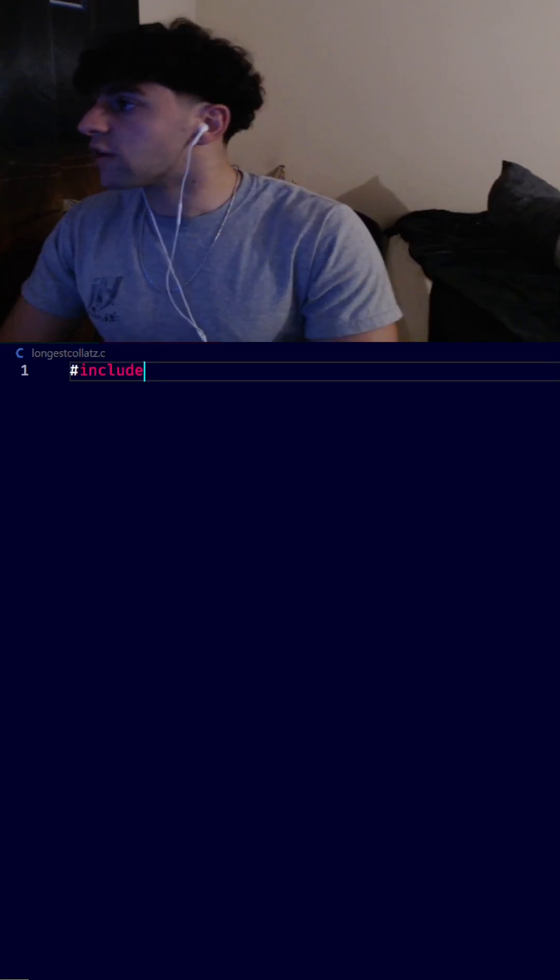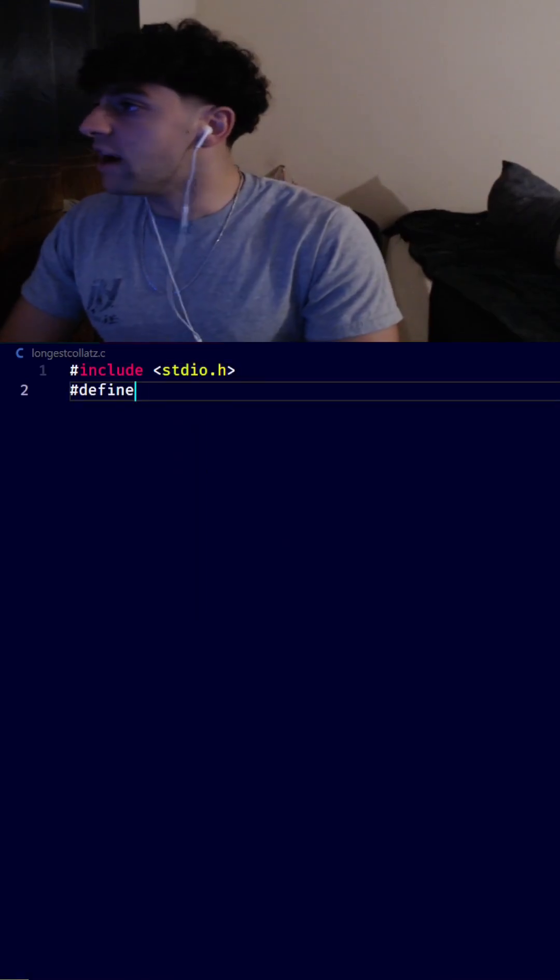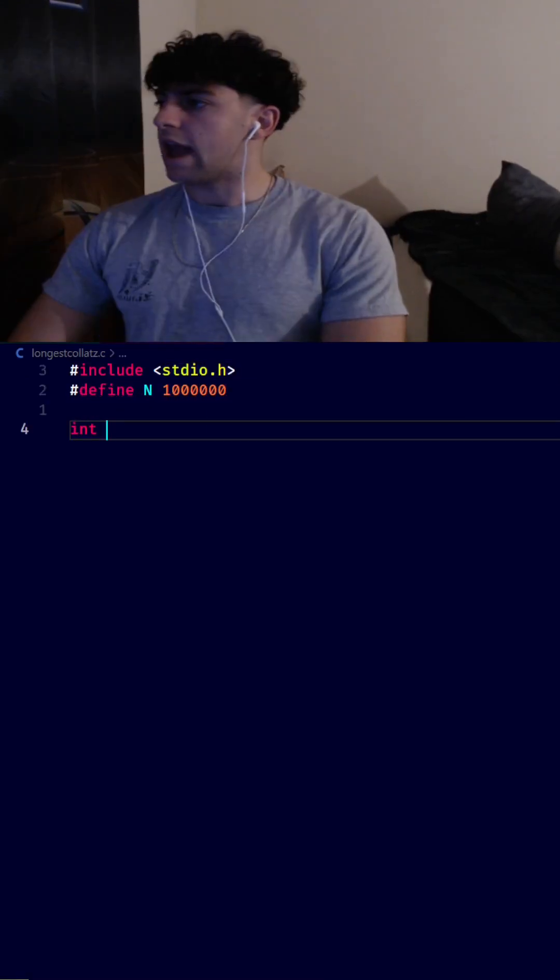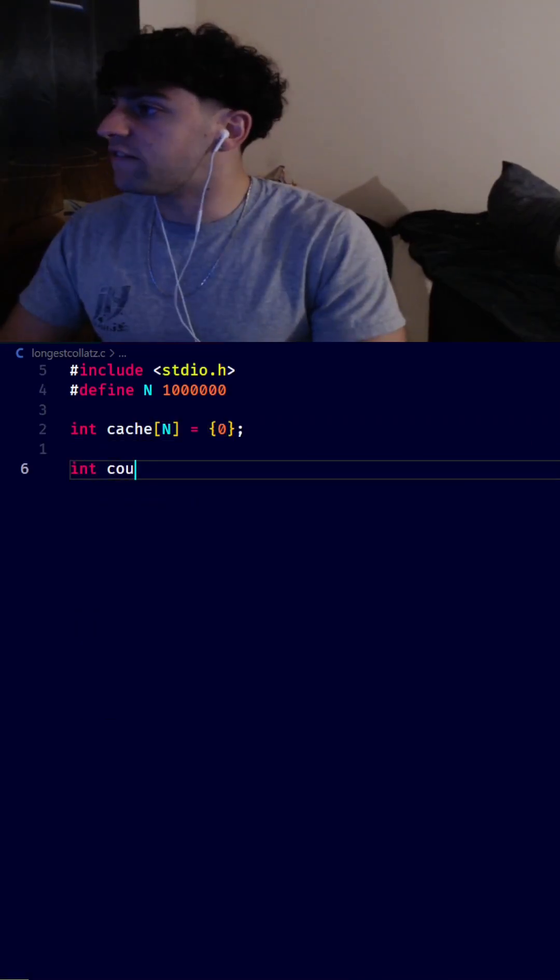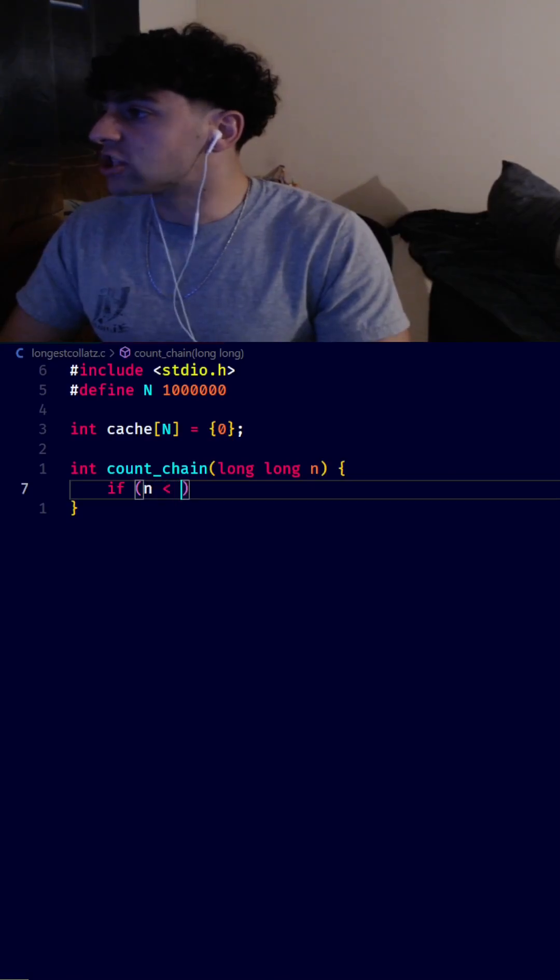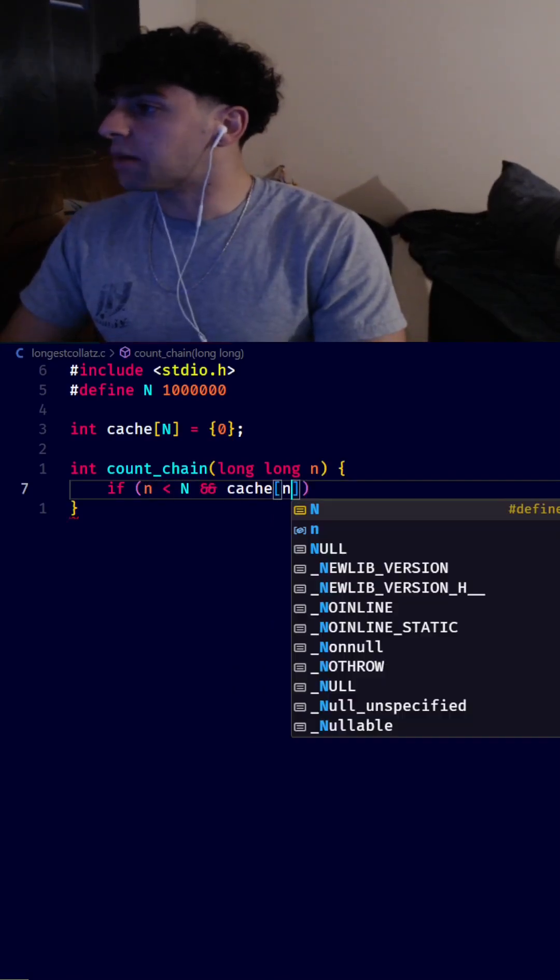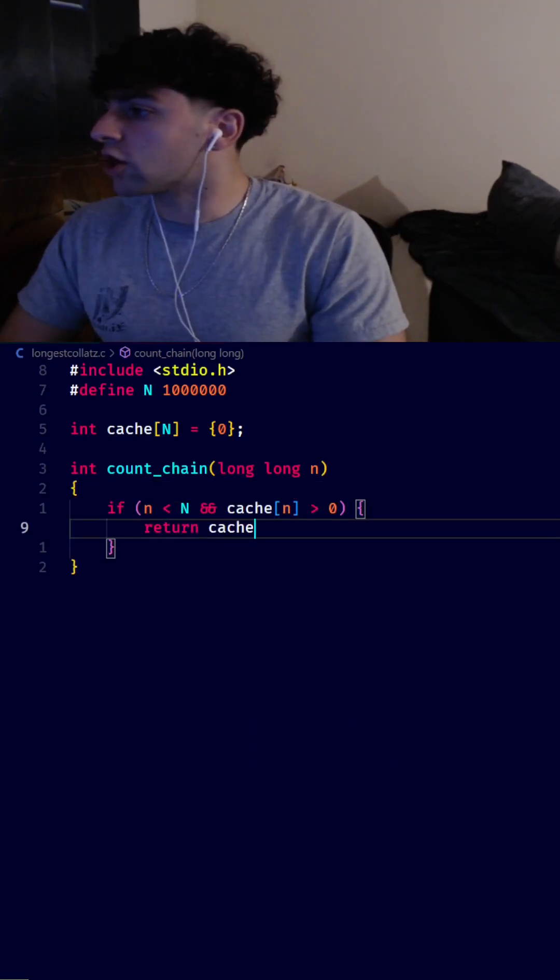With all that known, let's get to coding. First, I'll include the standard IO library. Then I'll define n to be 1 million. Now I'll initialize a global cache the size of n to all zeros. Now I'll create a function called count_chain that will take a starting number n. And we'll check if that number n is smaller than 1 million and we've already computed that number. Then we can just return our computed value.